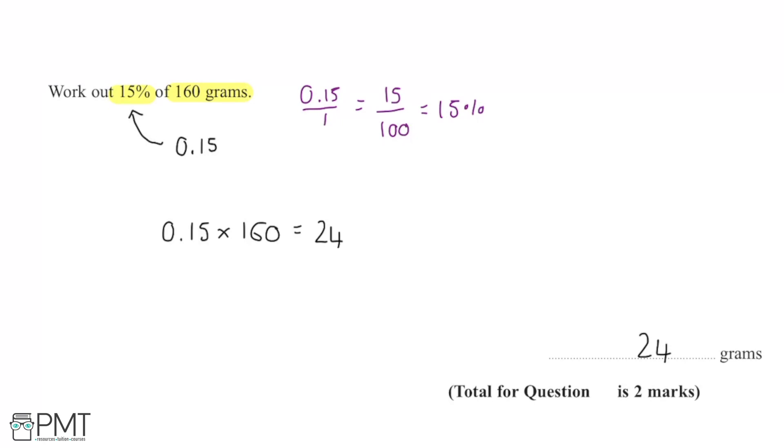So 1% of 160 is going to be 160 divided by 100, and that's going to give us an answer of 1.6. And then we can multiply 1.6 by 15, as this one's equal to 1%, this one's going to be equal to 15%, and that gives us 24 as well.